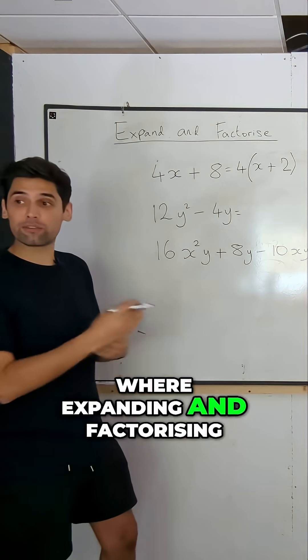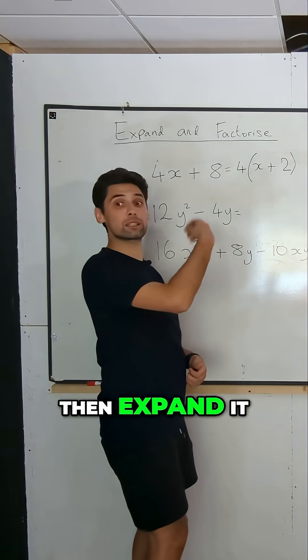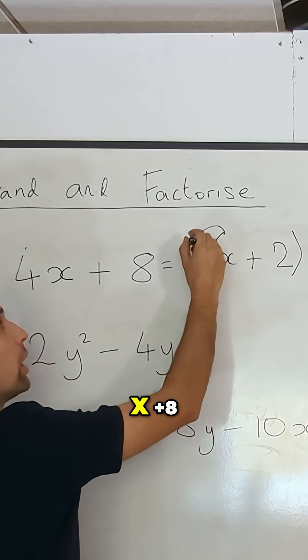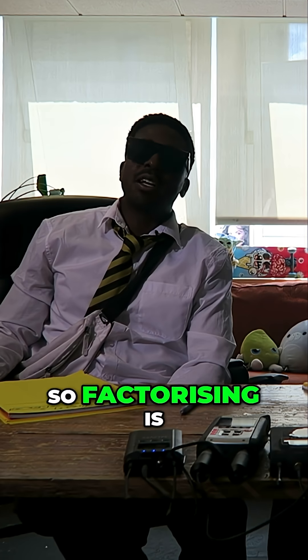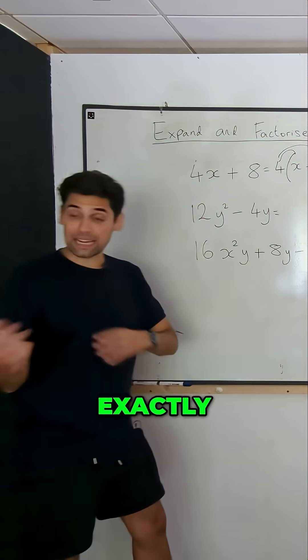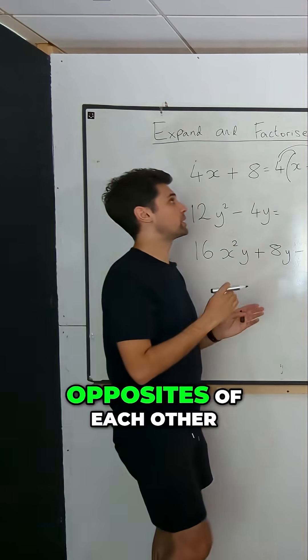And then this is where expanding and factorizing comes together. If we were to then expand it, it would be 4x plus 8, which is that. So factorizing is to put it in brackets. Exactly. It's literally expanding and factorizing are opposites of each other.